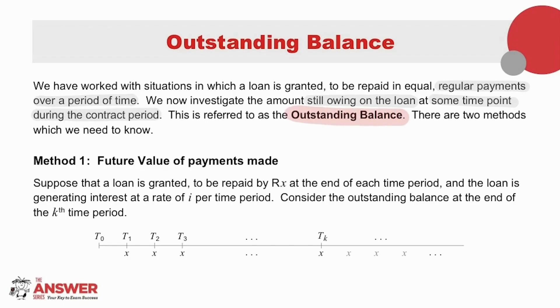There are two methods of doing this and we need to know both of them. The first involves future values. So if we look at the timeline below where X rand is being paid at the end of each time period, we see here at time period T₁ there is an X, T₂ there is an X, T₃ an X, all the way up to Tₖ there is an X.